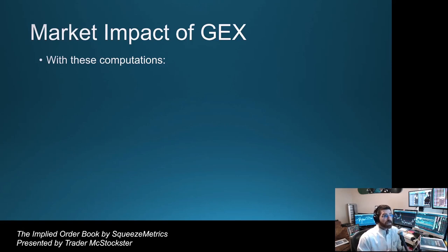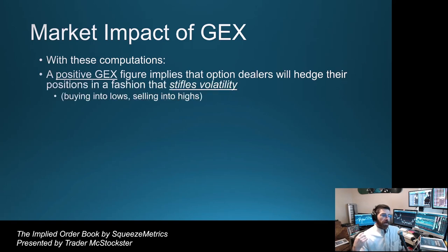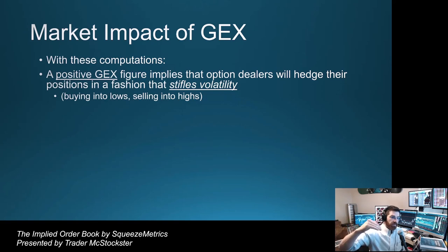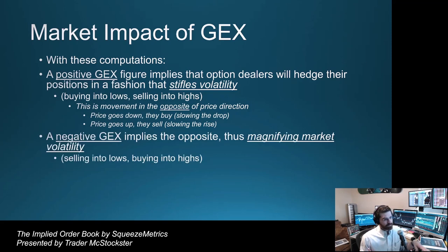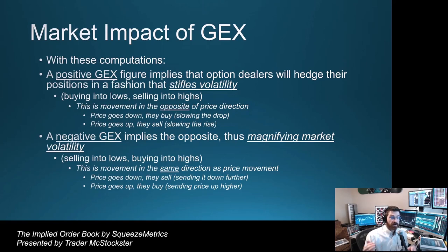The market impact of GECS: a positive GECS figure implies that option dealers will hedge their positions in a fashion that stifles volatility — they will buy into lows and sell into highs. As price drops, they buy, pushing it back up a little bit; as price rises, they sell. That's positive GECS — movement opposite to price direction. A negative GECS implies the opposite, magnifying market volatility: they sell into lows and buy into highs, sending price further in the same direction.